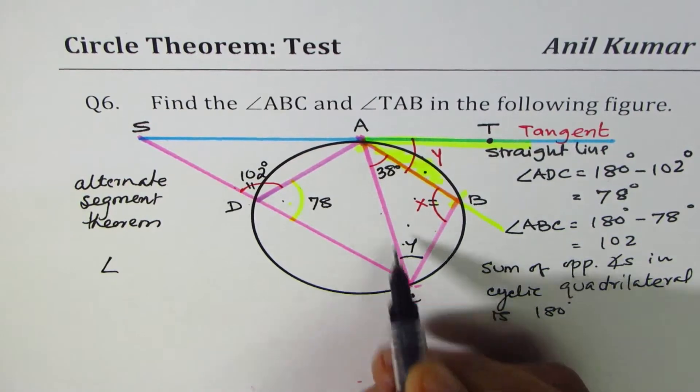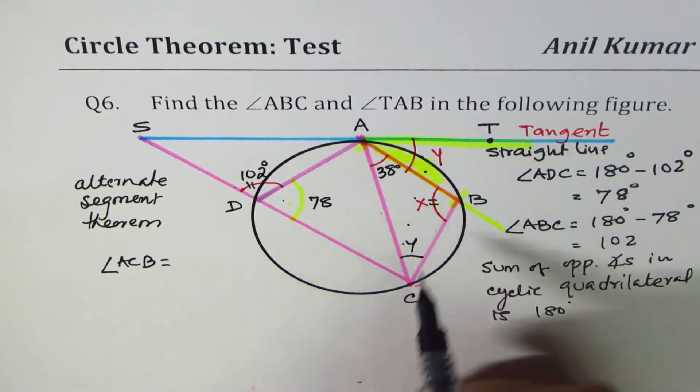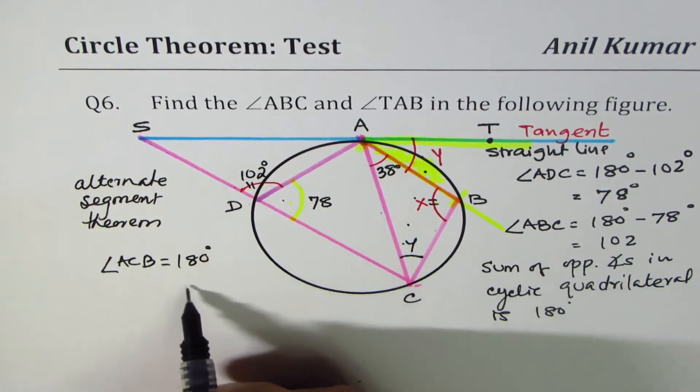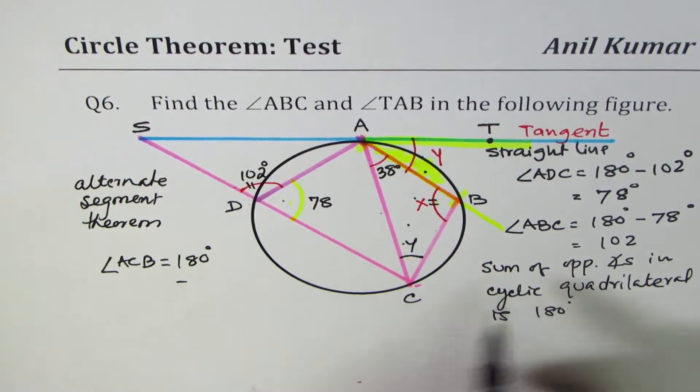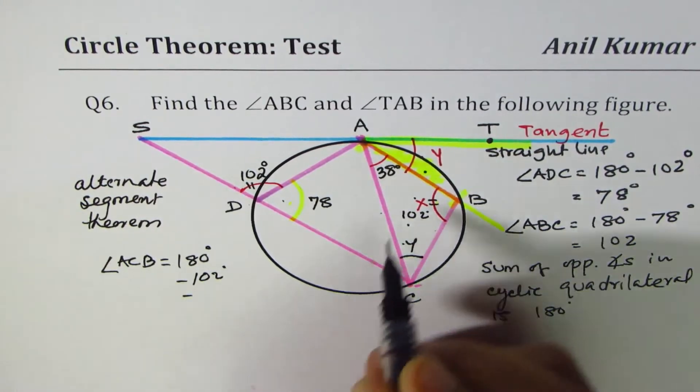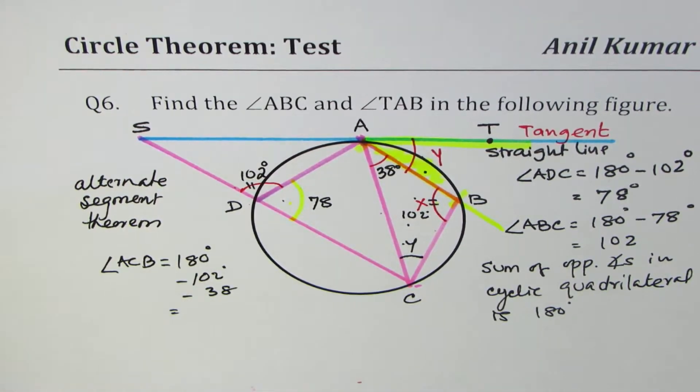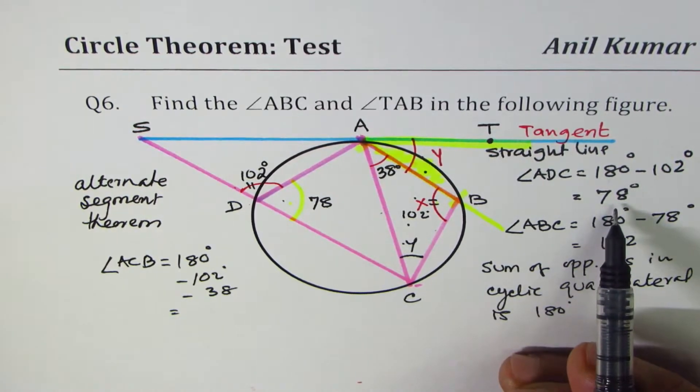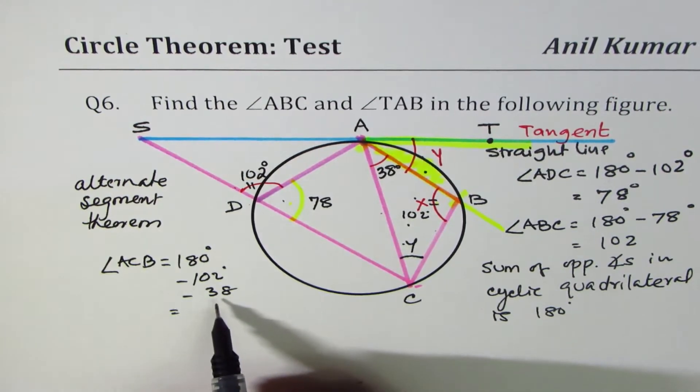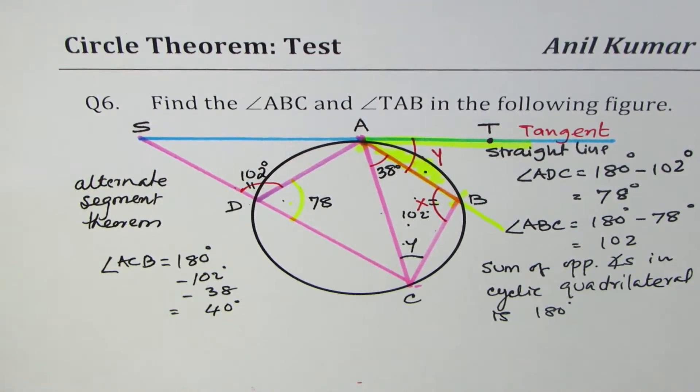So, let's find out what is the angle ACB. Angle ACB is a part of the triangle ABC, should be equal to 180 degrees, take away angle B. Angle B is 102 degrees. So, take away 102 degrees and take away 38 degrees. So, that gives us angle ACB. 180 take away 102, we have already done, is 78, and from 78 take away 38, gives us 40 degrees. So, we get the angle as 40 degrees. So, Y is 40 degrees.